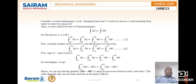Now we will consider another cycle, 1A-2C-1. For this process, we can write the integral from 1A to 2 of δQ plus the cyclic integral from 2C to 1 of δQ equals the cyclic integral from 1A to 2 of δW plus the cyclic integral from 2C to 1 of δW. That is equation number 2.